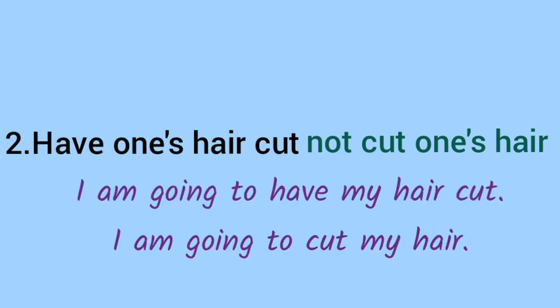Number 2: have one's haircut. Here are examples: 'I am going to have my haircut' versus 'I am going to cut my hair.' In both sentences, the first sentence is right — 'I am going to have my haircut.'